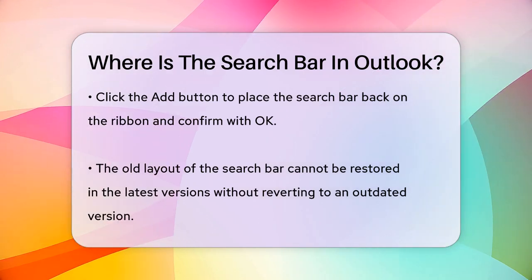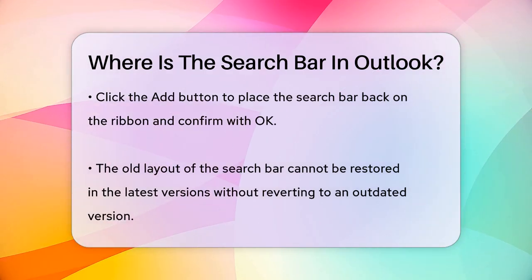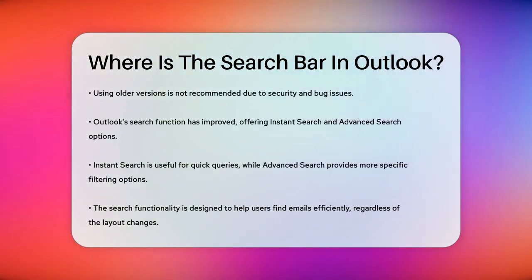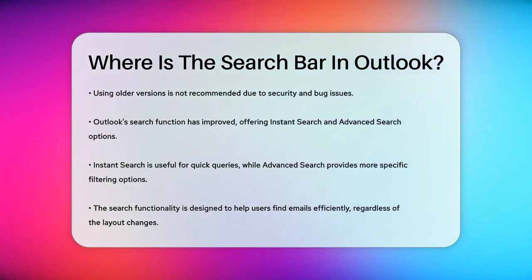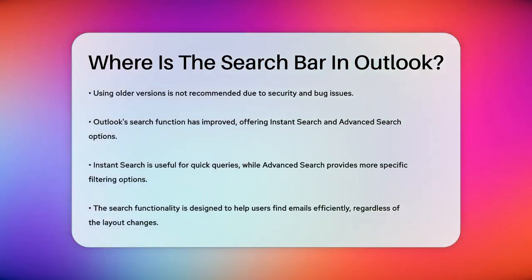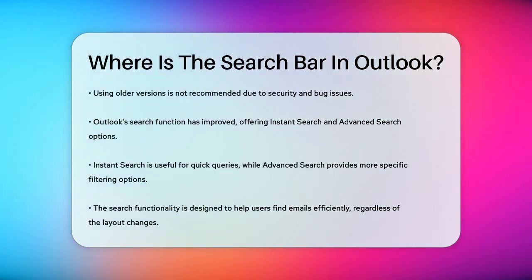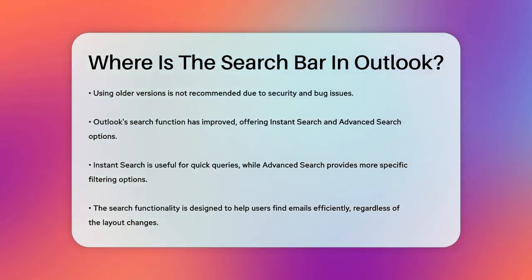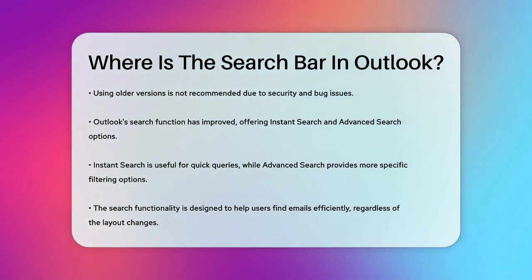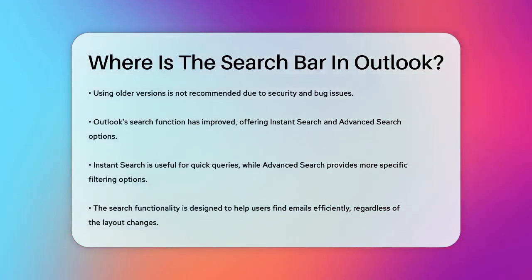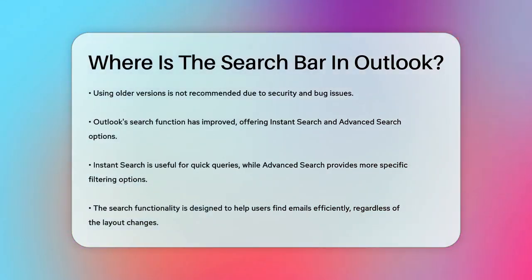Outlook's search function has also become more powerful. You can use Instant Search or Advanced Search to find emails quickly. Instant Search is great for quick searches, while Advanced Search allows you to narrow down your criteria by date, email size, and even words in attachments.